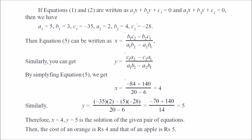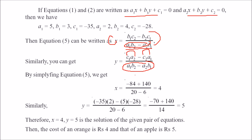Let's formally define it. For equations a1x plus b1y plus c1 equals 0, and a2x plus b2y plus c2 equals 0, the solution is: x equals (b1·c2 minus b2·c1) divided by (a1·b2 minus a2·b1), and y equals (c1·a2 minus c2·a1) divided by (a1·b2 minus a2·b1). The denominators are the same for both x and y.